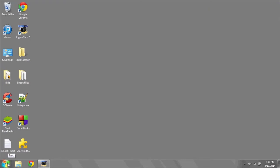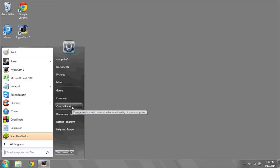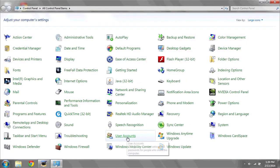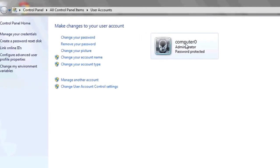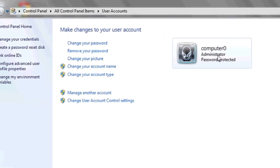You can check if you're the administrator by clicking Start, going to Control Panel, and then clicking on User Accounts. Here you'll see the different users, and if the one you're logged in says administrator underneath, that means you're logged in as the administrator.